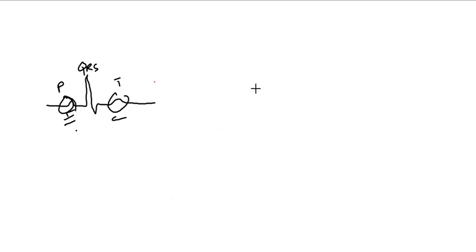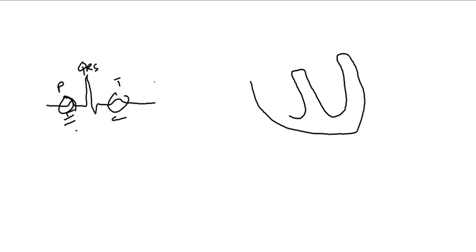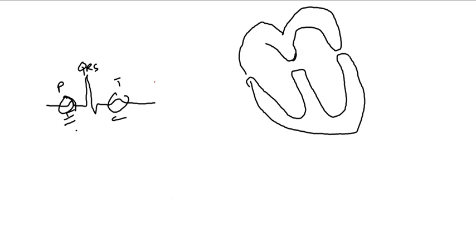Let's draw the conduction system of the heart. This is the fibrous pressure separating the heart chambers. We have atrioventricular valves — on the right side we call them tricuspid valves and on the left side we call them mitral valves. Now let's draw the conduction system. This is the SA node, the natural pacemaker of the heart.